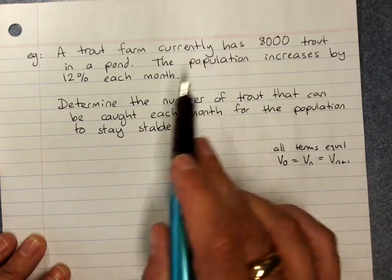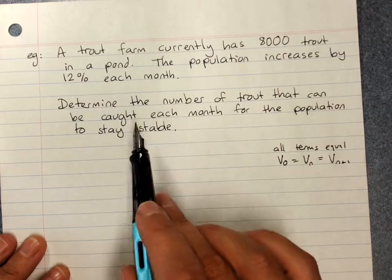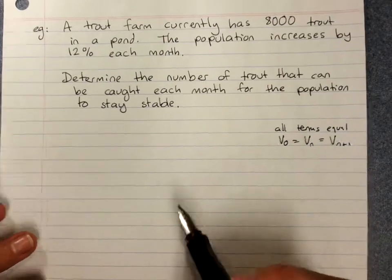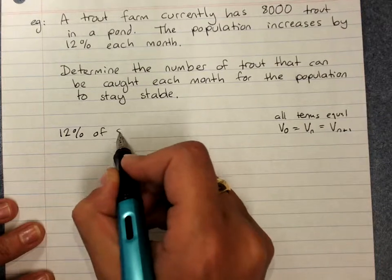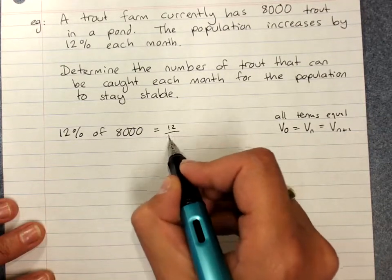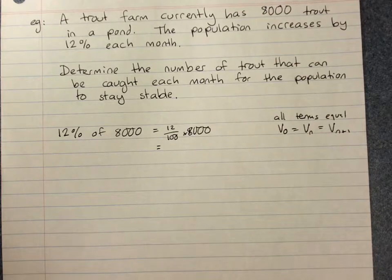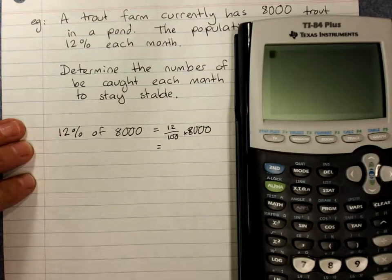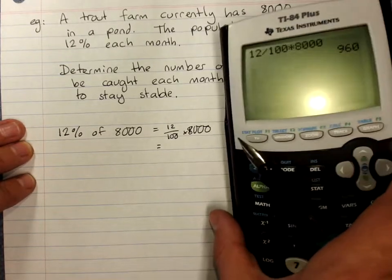So, 8000 trout in a pond, the population increases by 12% per month. Work out how many we can catch each month for the population to stay stable. You could just find 12% of 8000 — that's 12 over 100 times 8000 — because you can take that many out each month as that many is going in each month. So I can take out 960 trout each month.